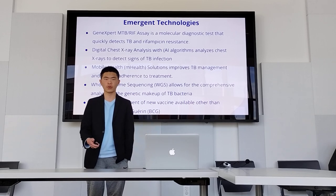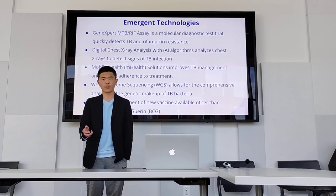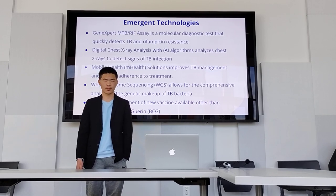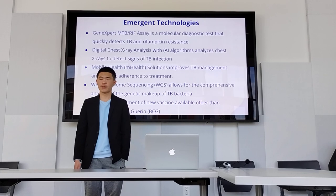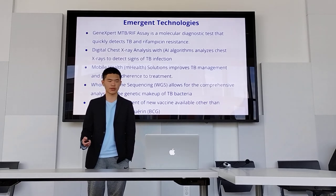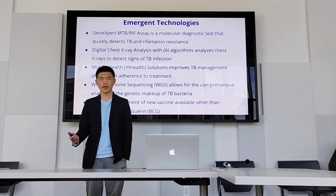If people do not finish their course of treatment, not only does it let some TB survive in the body which can cause it to spring up again, it also leads to the development of drug resistance, which is a major problem. We've been working on whole genome sequencing so we can have a comprehensive analysis of the genetic makeup of the TB bacteria. Finally, we've been developing new vaccines other than the BCG, because if we have more effective vaccines, we can better counter TB.